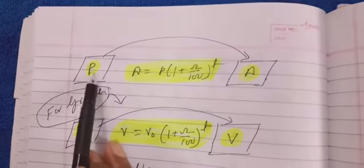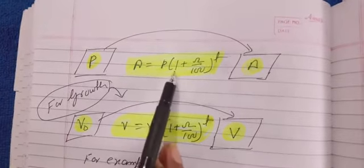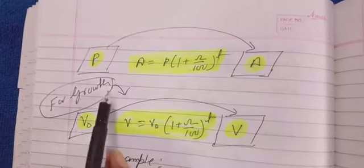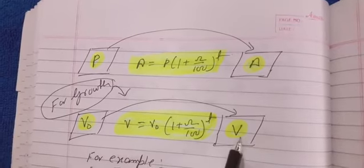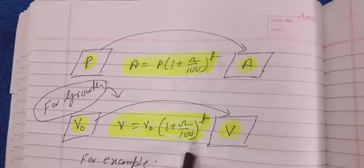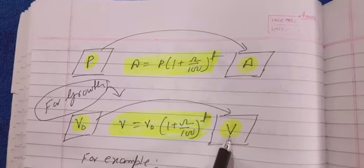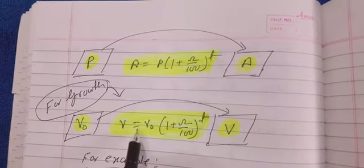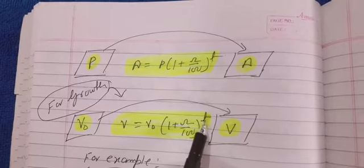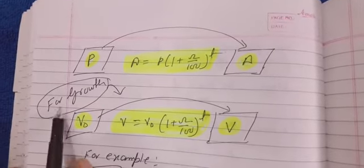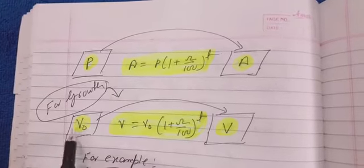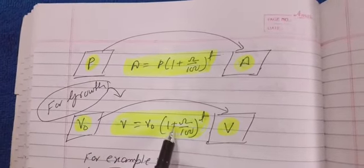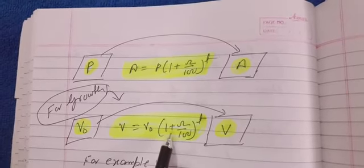To summarize: for finding amount when we know P, the formula is A = P × (1 + r/100)^t. For growth — not depreciation — if we know that an item's cost was less and after a few years its value increased, we use: V = V₀ × (1 + r/100)^t. If there is a fall in rate, we use depreciation, and the only change is that the plus sign becomes a minus sign. I will explain that in my next video.